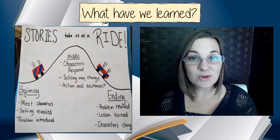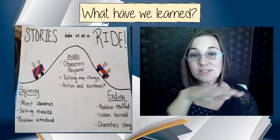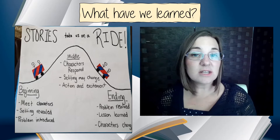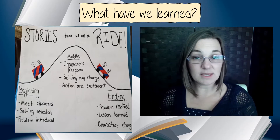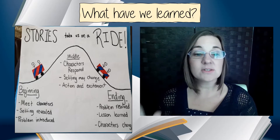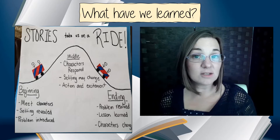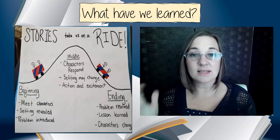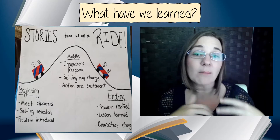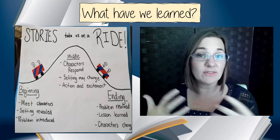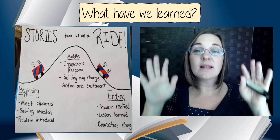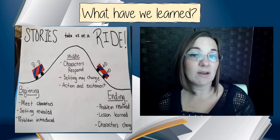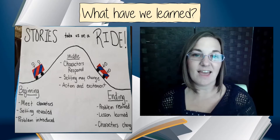And finally, we talked about story structure and how a story does not just stay flat — it builds and it grows. We learned that there are special key details usually found at the beginning, like meeting the characters, understanding the setting, and getting introduced to the problem. In the middle, there are so many things that happen as the characters begin to respond to the problem and make choices, the settings might change, and all the action happens. At the end, the problem is resolved, the lesson might be learned or the characters might change, and everything begins to wrap up.